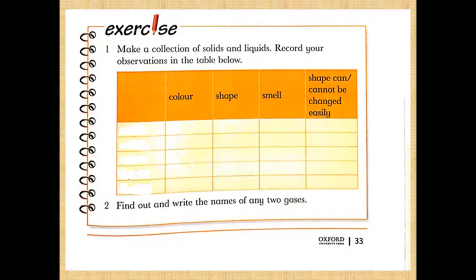Unit number seven: Solids, Liquids, and Gases. Today we will do exercise question number one: make a collection of solids and liquids and record your observations in the table below. In the first column you will write the state of matter. There are five columns: state of matter, color, shape, smell, and whether its shape can change or cannot change.